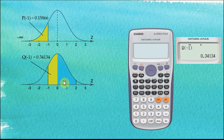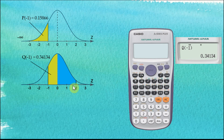Now let's find the area from 0 to 2. We still use Q because Q finds the area from a given number to 0. In this case, the area from 2 to 0 means we key in Q(2). Q(2) means the area from 2 to 0.